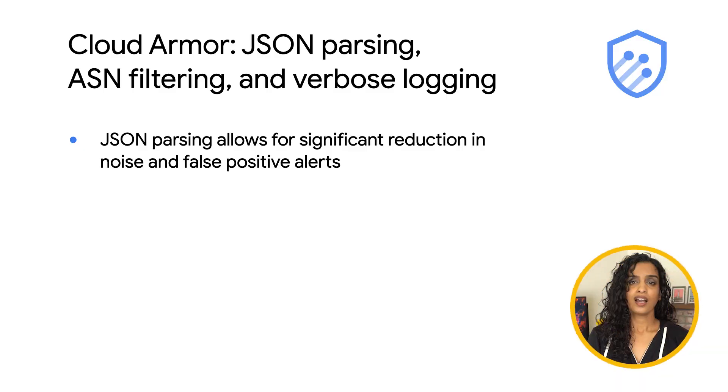Once enabled, you can significantly reduce the noise and false positive alerts for workloads with requests containing JSON. Another available rule attribute is filtering based on an ASN.